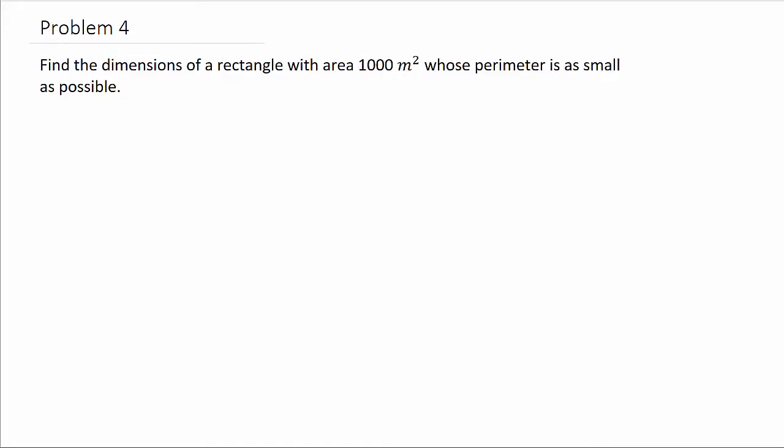Alright, so here it says find the dimensions of a rectangle with area of 1000 square meters whose perimeter is as small as possible. Alright, so we want to minimize the perimeter. And we know the area is 1000 square meters. So let's write down all the information that we know and let's write down what we want to find.